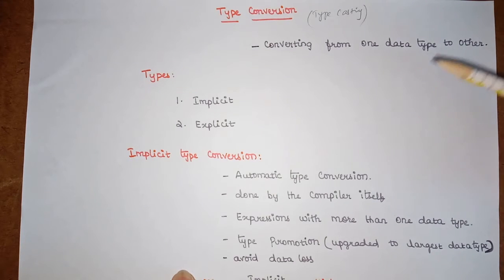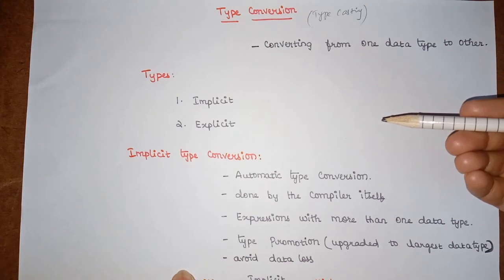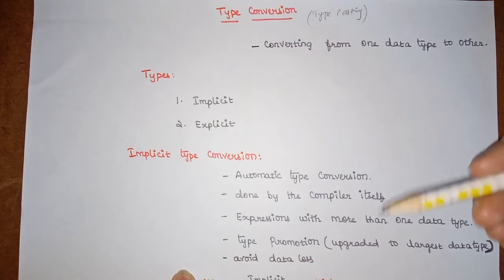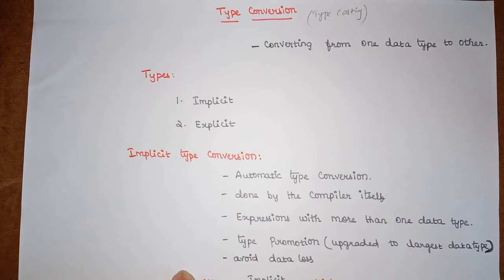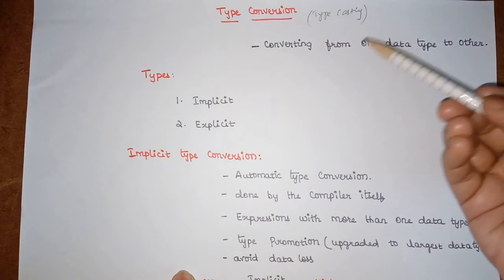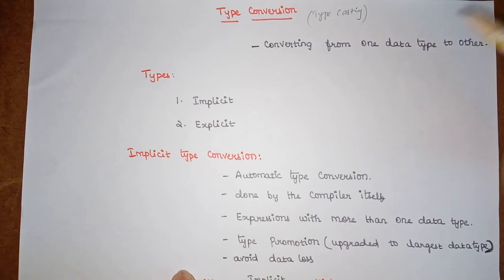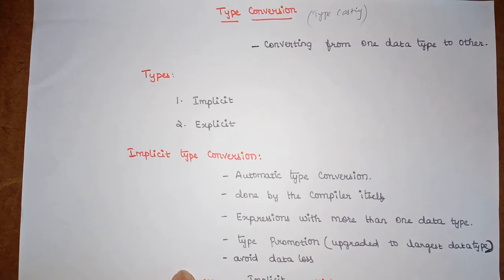Type conversion means converting from one data type to another data type. So when we have declared any variable and while we are processing in a program, we can convert that variable from one data type to another data type. That is what type conversion is. It is also called as type casting. The reasons for doing this type conversion include avoiding data loss, and also when we have expressions which involve more than one data type.